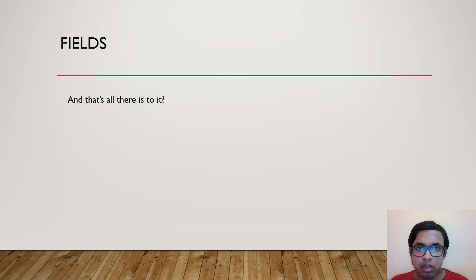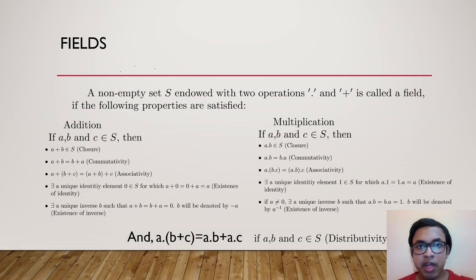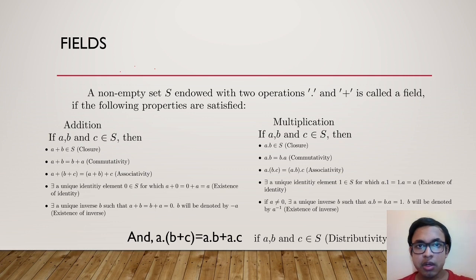A natural question arises: we have two binary operations on S, but we don't know how they interact with each other. We have an additional property called distributivity. In R and C we have a·(b+c) equals a·b + a·c for any three elements a, b, c in S. This property must hold in a set for it to be called a field, in addition to all the properties of addition and multiplication.